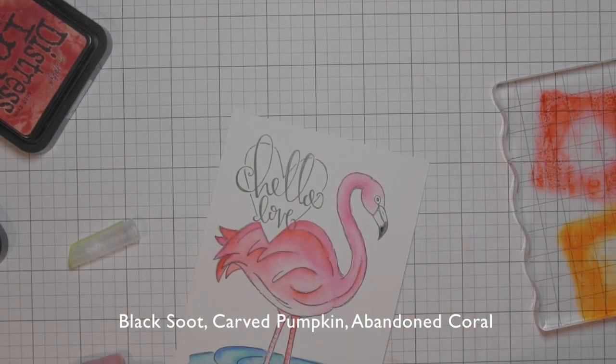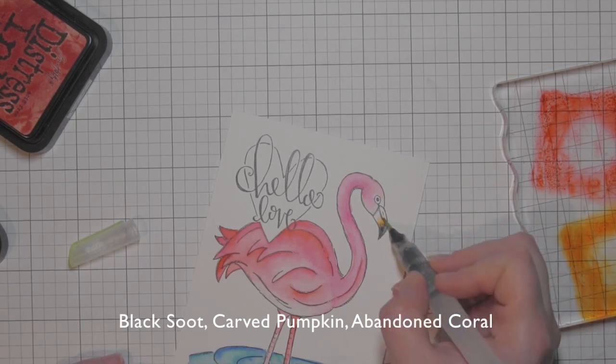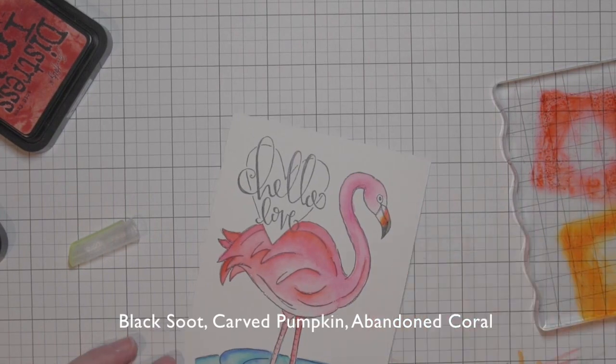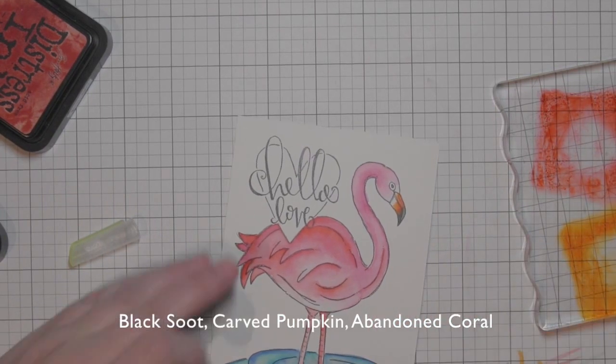For the beak, I'm laying down a little black soot and then some carved pumpkin. I'll even add in a little abandoned coral there.